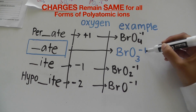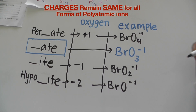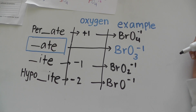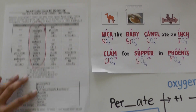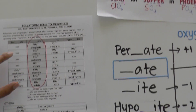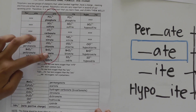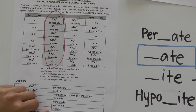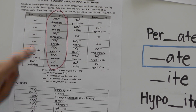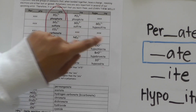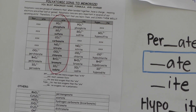Notice how the charge remains the same for all 4. You can use the same technique for all the other polyatomic ions, but notice how some of these don't exist in other states. Thank you for watching, goodbye!